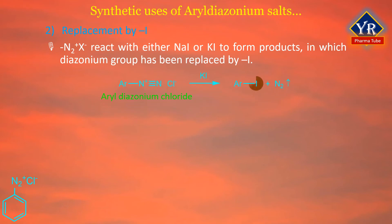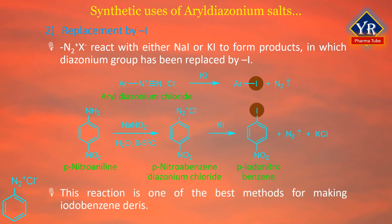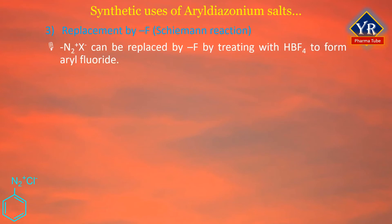Replacement by iodine: aryl diazonium salts react with sodium iodide or potassium iodide to form products in which the diazonium group has been replaced by iodine. For example, in the synthesis of para-iodonitrobenzene, the amino group of para-nitroaniline is replaced by an iodine atom para to the nitro group. This is a useful reaction because aryl iodides cannot be produced by direct iodination with iodine and a Lewis acid catalyst, as iodine reacts too slowly.